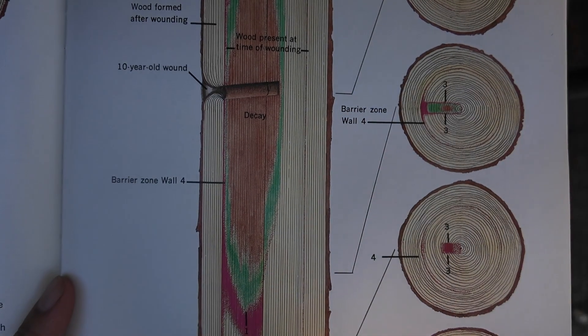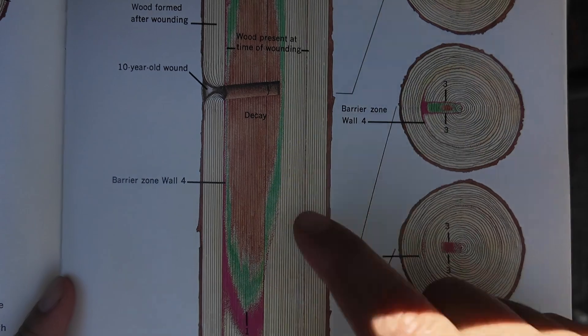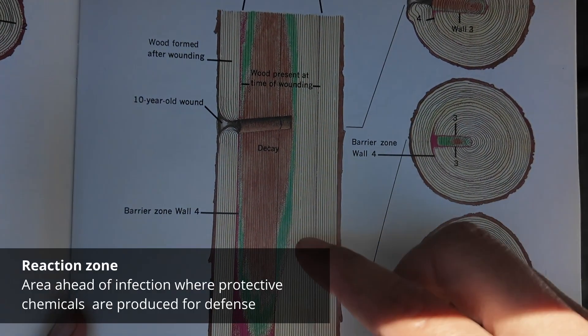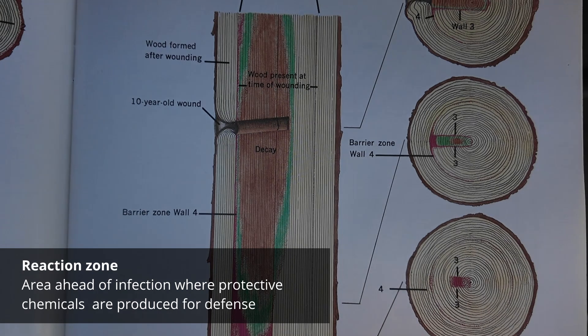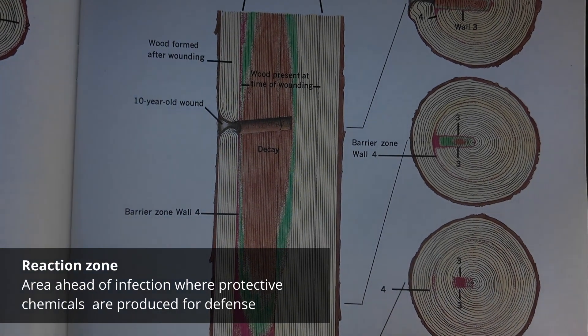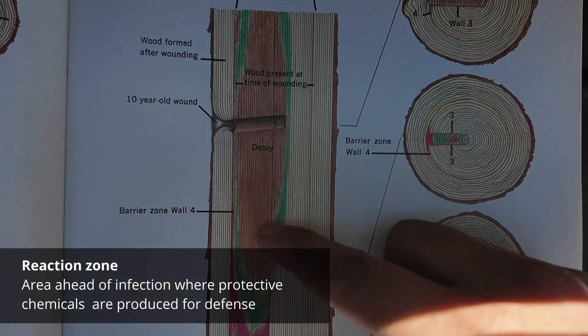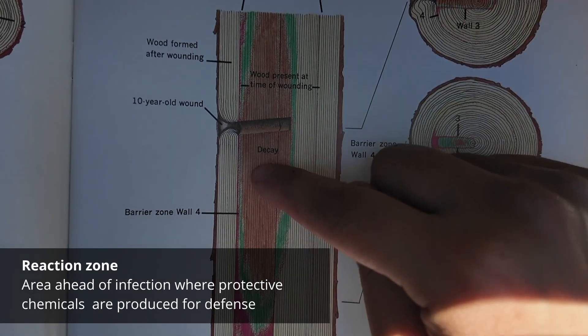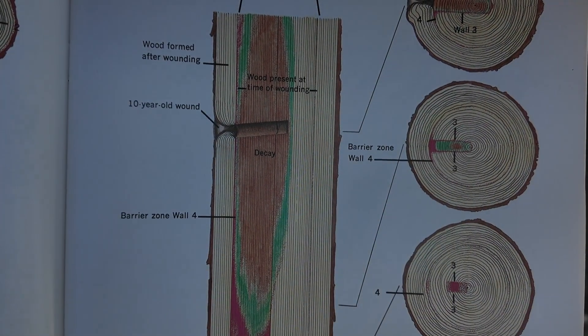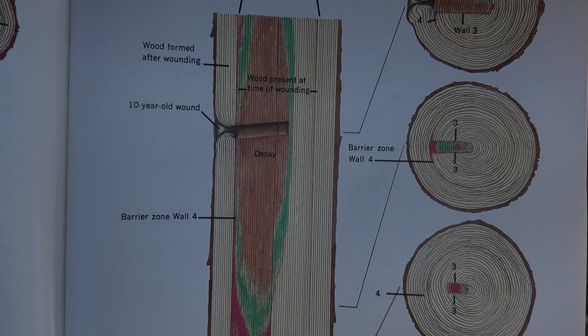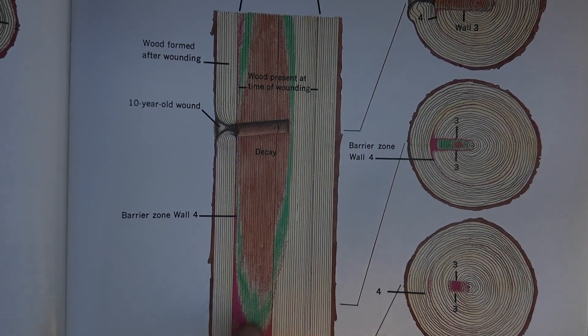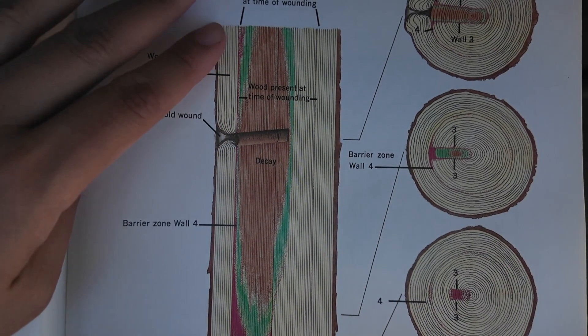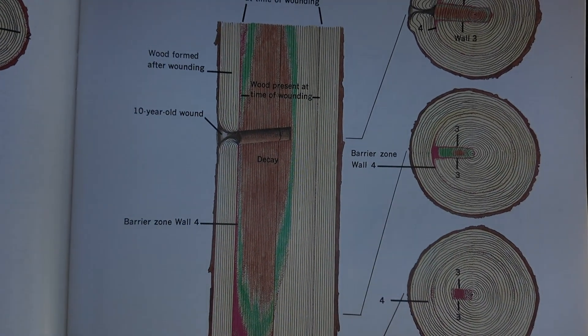In addition to the walls, there's what's called a reaction zone that forms in advance of the progression of the problem. This diagram isn't meant to show that, but I'm just using it to indicate that it's going to keep moving as the issue gets deeper into the tree. The tree is going to start putting out antimicrobial and phenolic compounds that help the tree resist the invasion, and it continues to move. So it's not the walls, but it's a parallel and relevant feature.